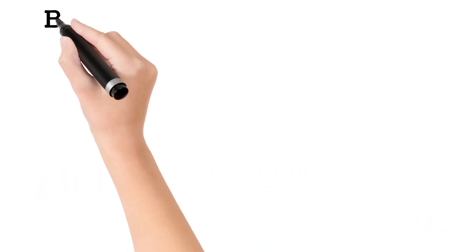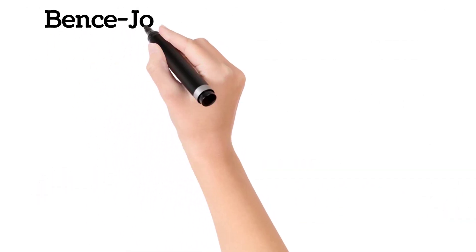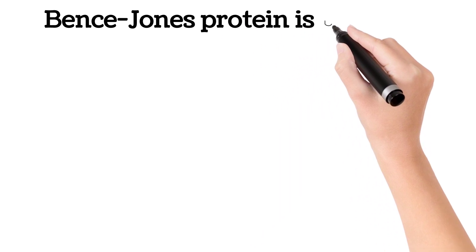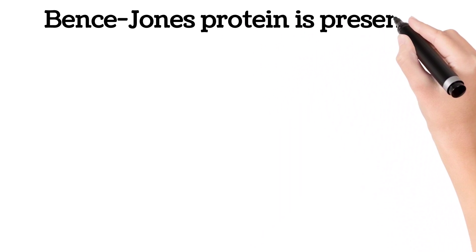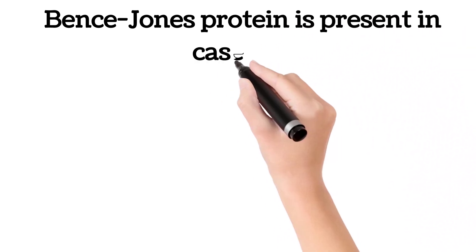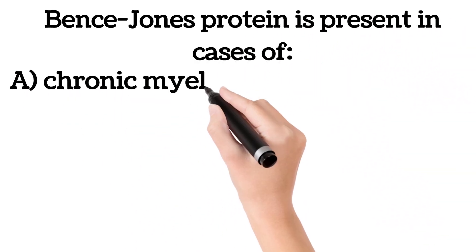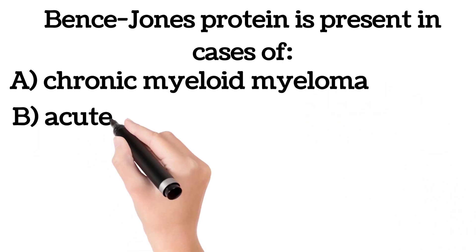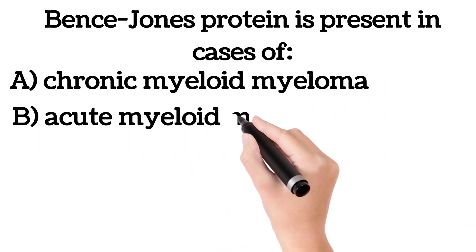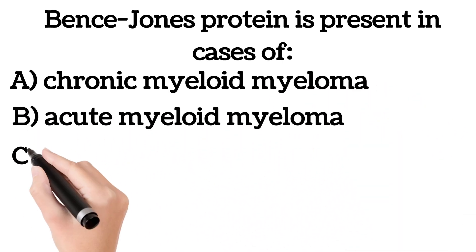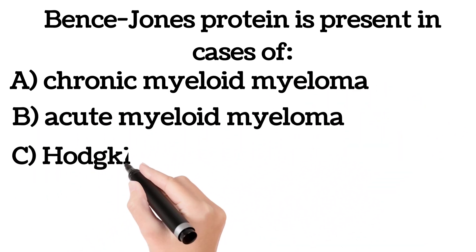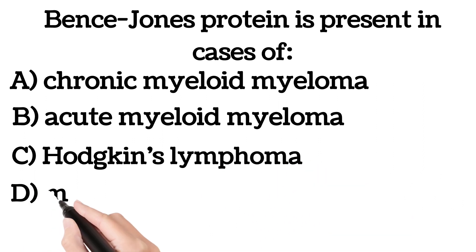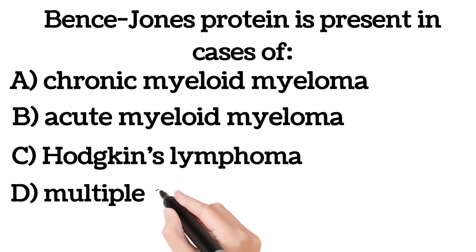Bence-Jones protein is present in cases of: A. Chronic myeloid myeloma, B. Acute myeloid myeloma, C. Hodgkin's lymphoma, D. Multiple myeloma.